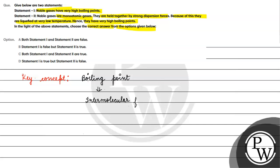Jitna zyada intermolecular forces of attraction honge, utna hi zyada boiling point hoga. Woh particles jaldi escape nahin karenge, jaldi vapors nahin banenge, jaldi vapor pressure atmospheric pressure ke barabar nahin hoga. And jab tak vapor pressure atmospheric pressure ke barabar nahin hoga, tab tak boiling point nahin ayega, kyunki boiling point is the temperature at which the vapor pressure of any liquid becomes equal to the atmospheric pressure.